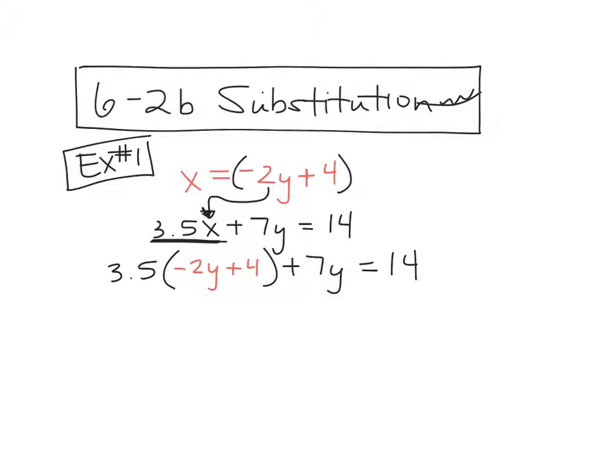So it's going to be 3.5 times negative 2y plus 4. So right now we've done this in our equation. You need to finish off that equation. So we're going to go plus 7y equals 14. What do I do? Distribute.